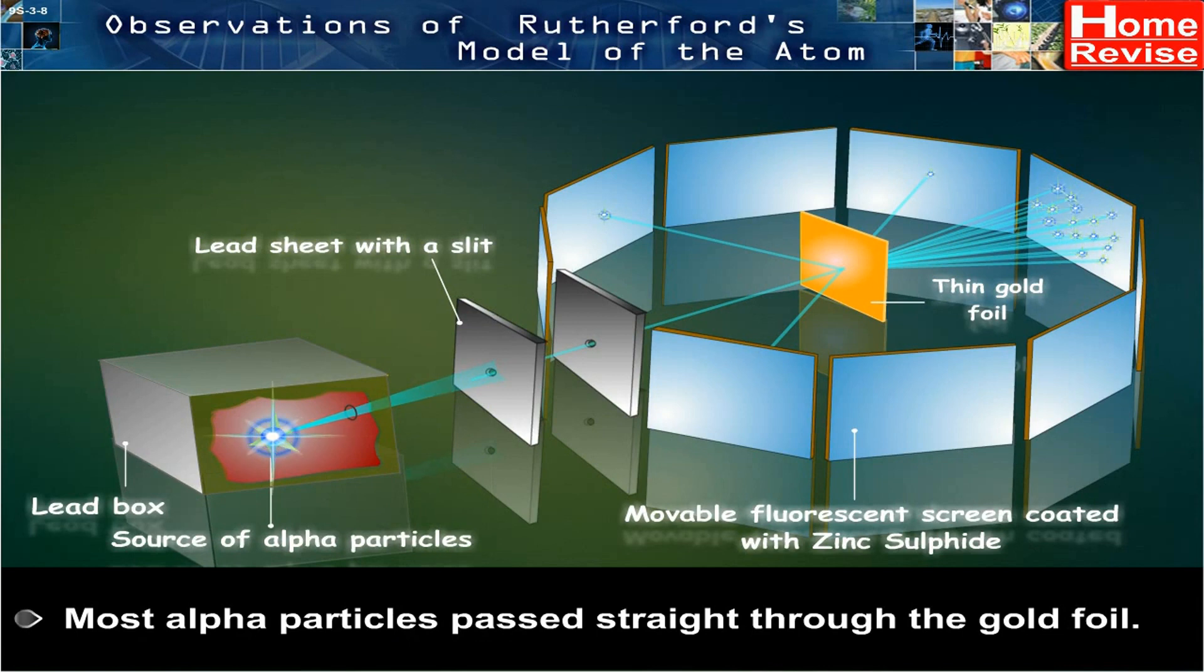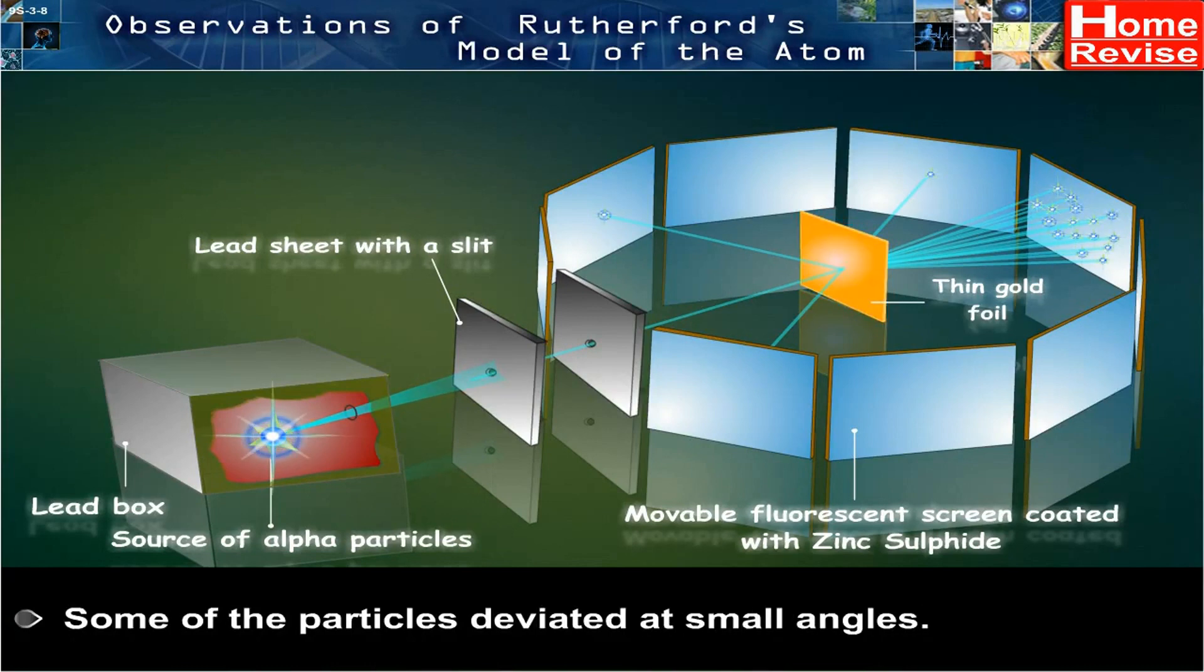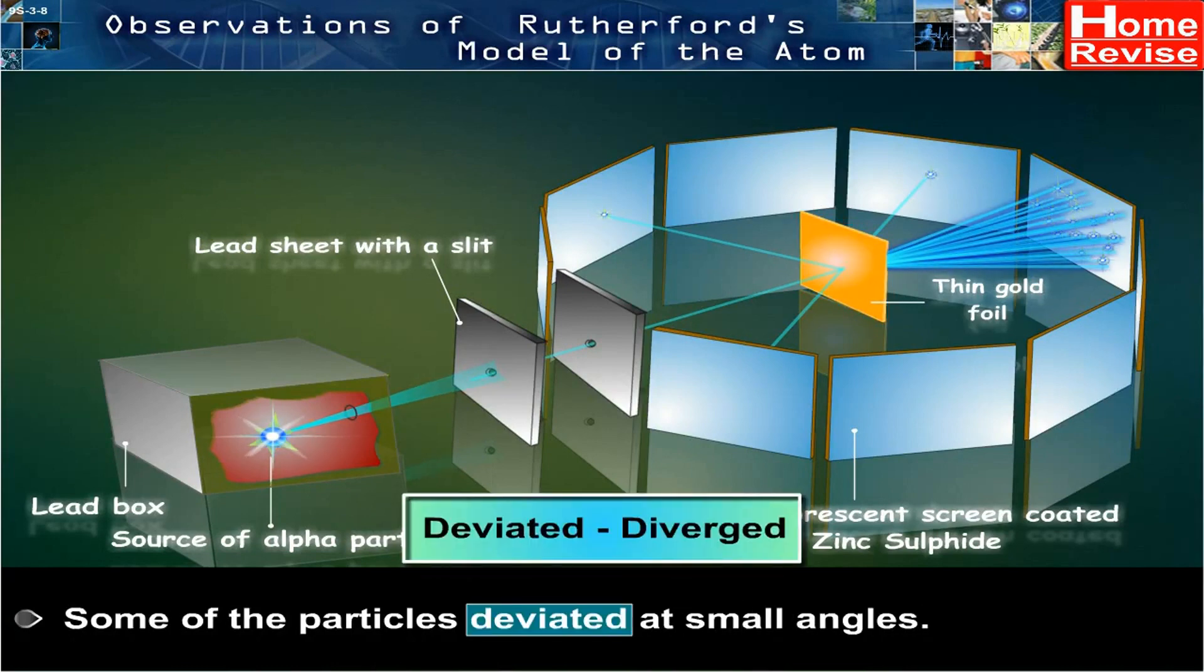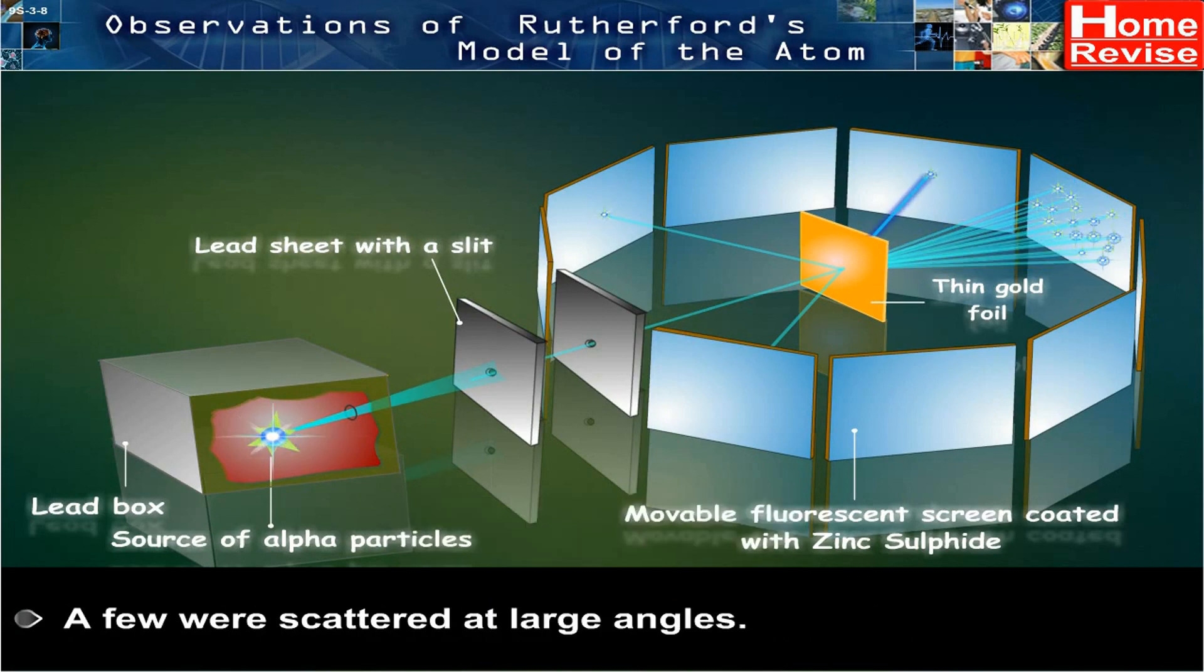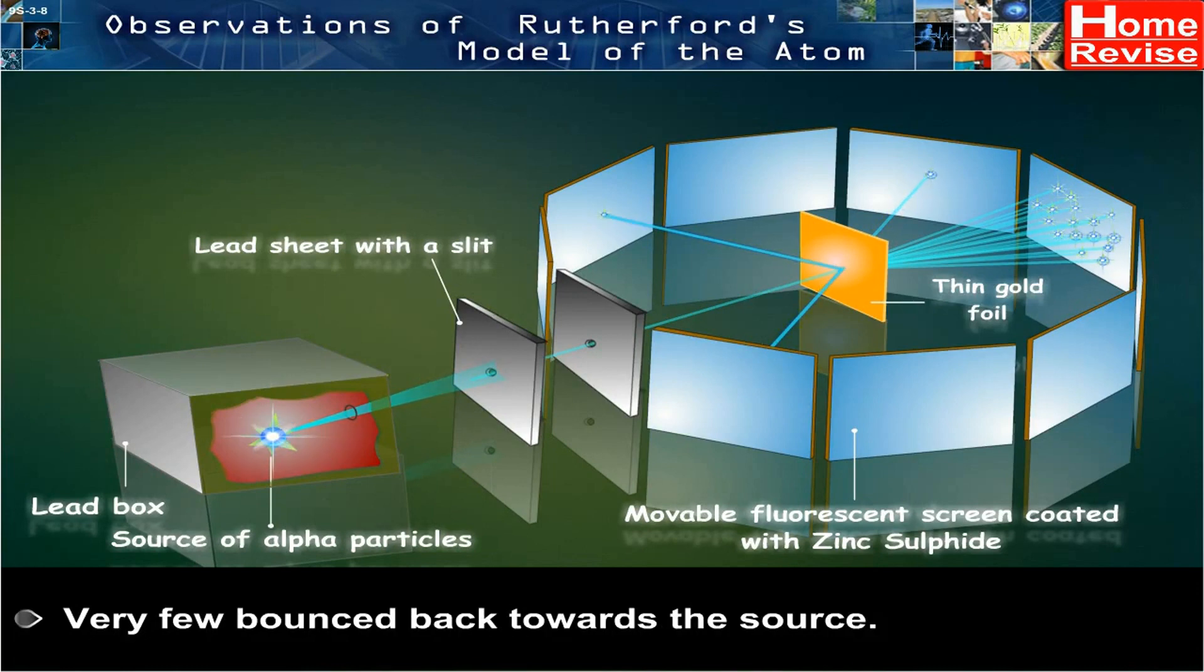Most alpha particles passed straight through the gold foil. Some of the particles deviated at small angles. A few were scattered at large angles. Very few bounced back towards the source.